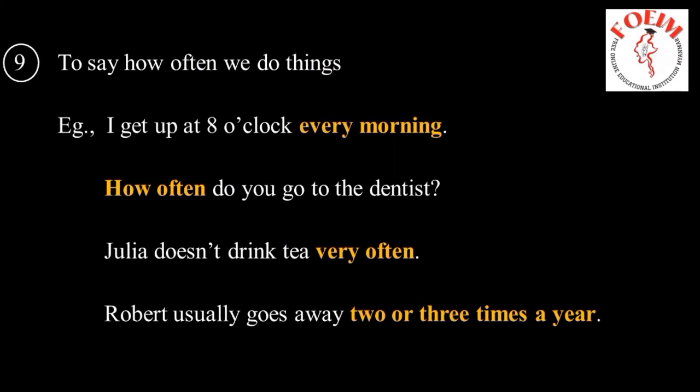The last usage is to say how often we do things. For example: I get up at 8 o'clock every morning — 'every morning' shows how often you get up at 8 o'clock. How often do you go to the dentist? Julia doesn't drink tea very often — this sentence also shows how often you do or do not do things. Robert usually goes away two or three times a year.